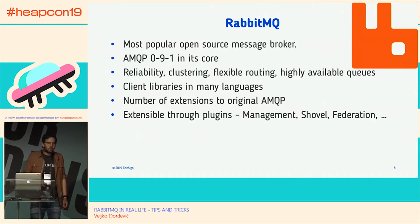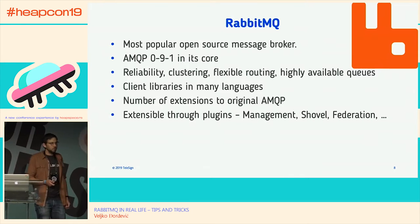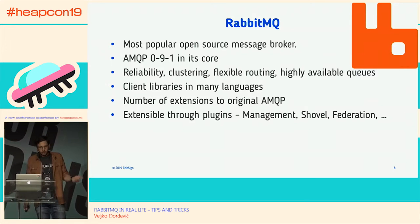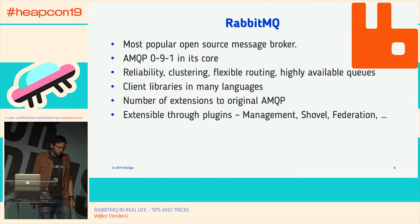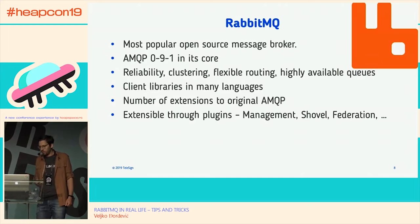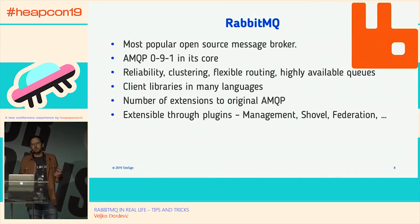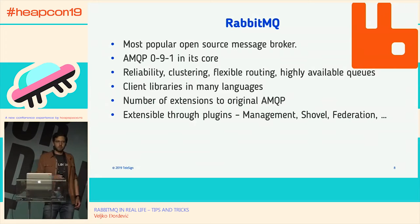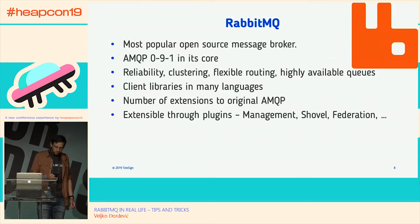RabbitMQ is extensible through plugins, and many are already part of the core installation distributed with the RabbitMQ server binary — you just need to enable them. The management plugin is pretty useful; it gives you three ways of managing your RabbitMQ installation: the management UI, the REST API, and the command line interface. The federation plugin allows us to connect remote RabbitMQ clusters that are physically in different administrative domains, like remote data centers.